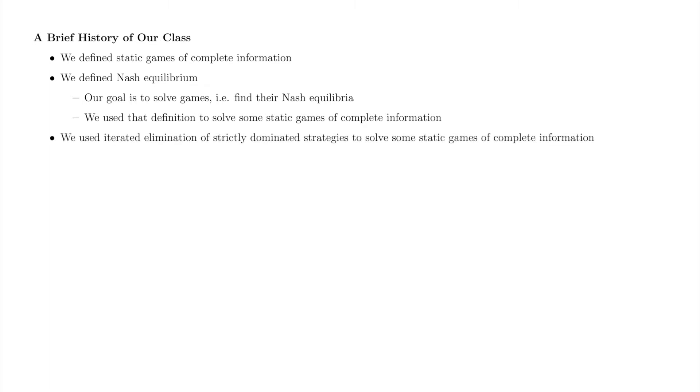However, using the definition was slow going, so we started to look for other methods to help us find Nash equilibrium faster. Our first method was iterated elimination of strictly dominated strategies. Iterated elimination of strictly dominated strategies was faster than the definition, which was good, but some games aren't solvable by iterated elimination.